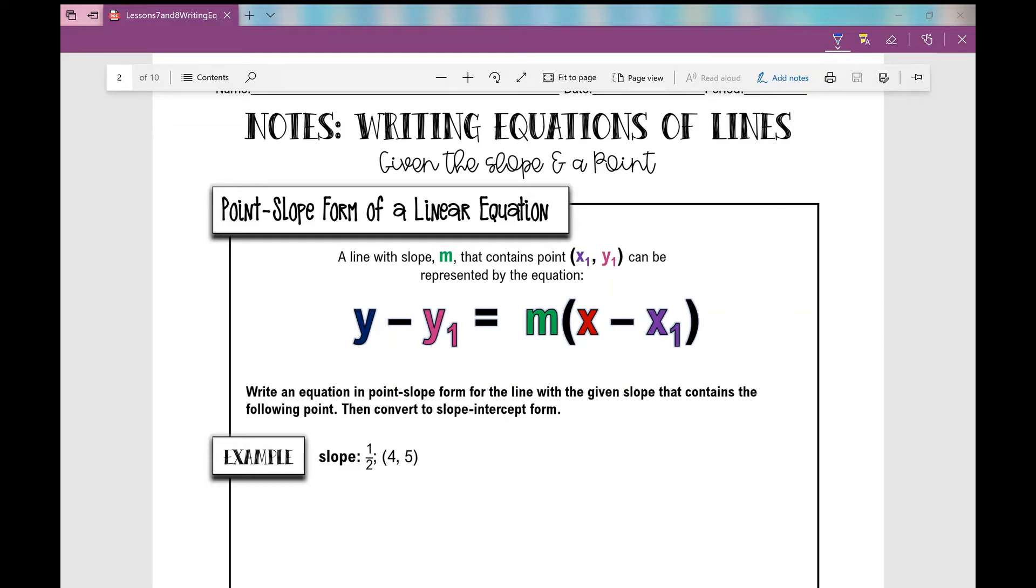Let's get started on today's notes over writing equations of lines. Today we're going to be writing the equation of a line when we're given the slope and a point on the line. I'm going to introduce you to a new form of a linear equation, a new formula if you will. This is called point-slope form. Obviously we're going to use it when we're given a point and the slope of the line.